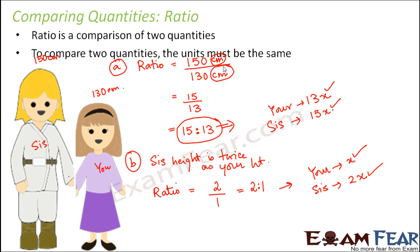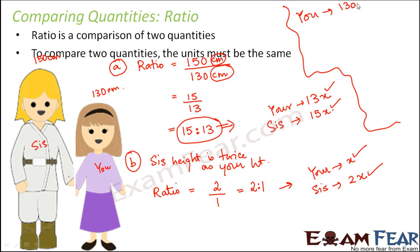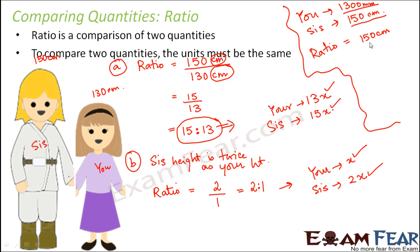Let's see what happens if the units are different. Suppose your height is given as 1300 millimeters and your sister's height is given as 150 centimeters. To find the ratio, you need both heights in the same unit. You can either convert 1300 millimeters to centimeters, or convert 150 centimeters to millimeters. Let's convert millimeters to centimeters by dividing by 10, giving 130 centimeters. So the ratio is 150 by 130, which equals 15 is to 13.